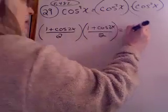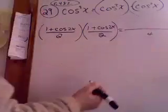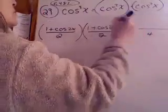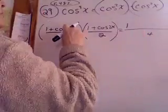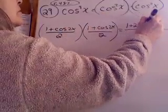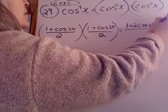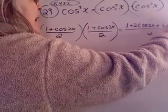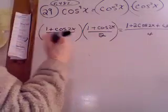Over 2. All right, now let's do some multiplying. Well, bottom becomes 4. Are you with me on that? And then this is a binomial. 1 times 1 is 1. Middle term, cosine 2x, cosine 2x. That's 2 cosine 2x plus cosine squared 2x.